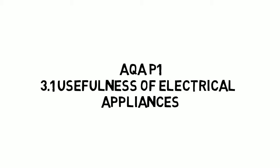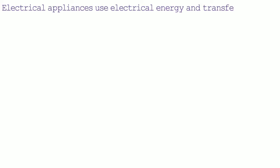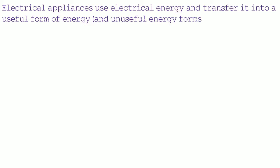Hi, this video will be looking at the usefulness of electrical appliances. Electrical appliances use electrical energy and transfer it into useful energy forms and unuseful energy forms as a byproduct. The amount of energy used by an appliance depends on the appliance's power and the amount of time that the appliance is switched on for. So the formula for working out how much energy is used is power times time.